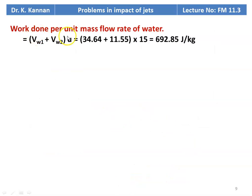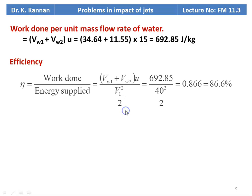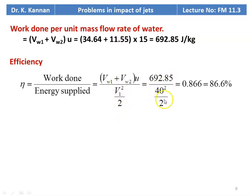Work done per unit mass flow rate of water = (Vw1 + Vw2) × U = (34.64 + 11.55) × 15 = 692.85 J/kg. Efficiency = work done / energy supplied per unit mass = (Vw1 + Vw2) × U / (V1² / 2) = 692.85 / (40² / 2) = 0.866, which is 86.6%.